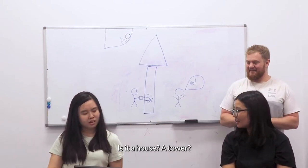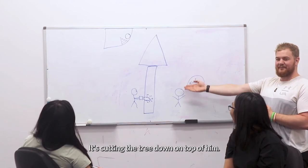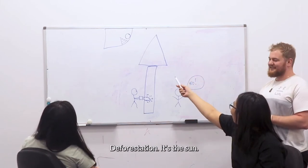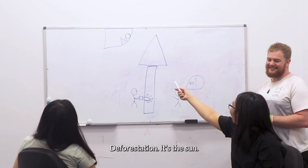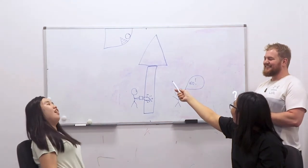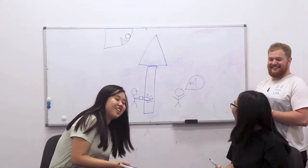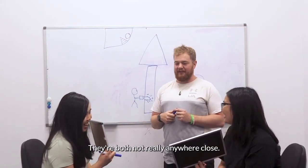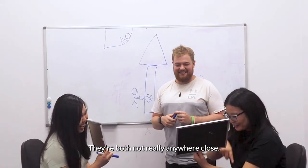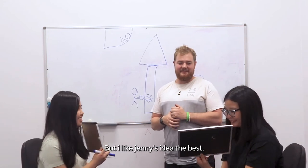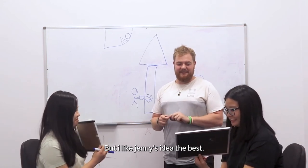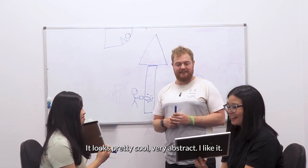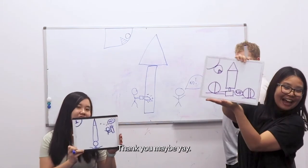Is it a house? A tower? It's cutting the tree down on top of it. And what's that? It's the sun — deforestation. They're both not really close. But I like Jennie's idea the best. It looks pretty cool. Very abstract. I like it.